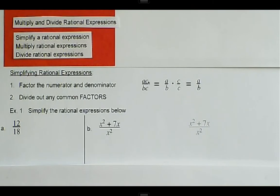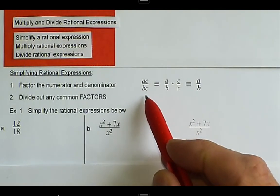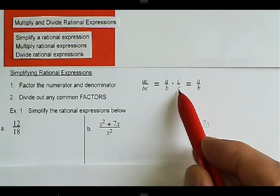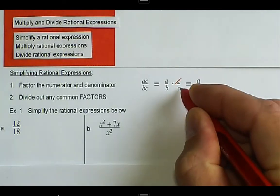So we have an example over here, a times c divided by b times c. So what we've done is we've factored out c's from the numerator and the denominator, and the c in the numerator cancels the c in the denominator.